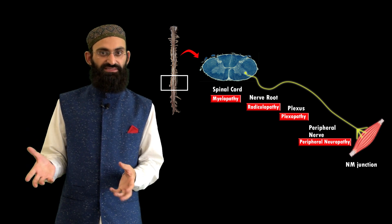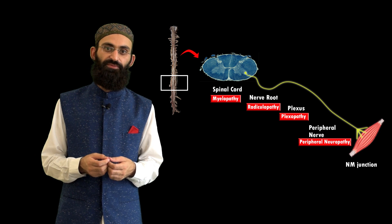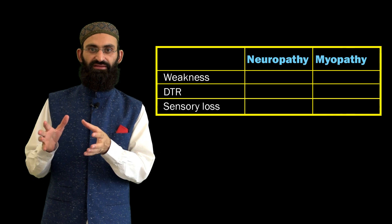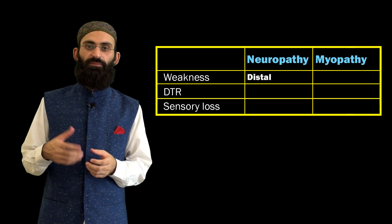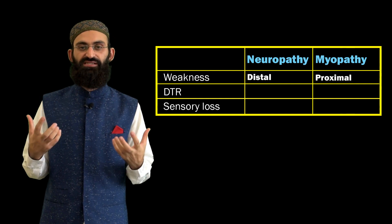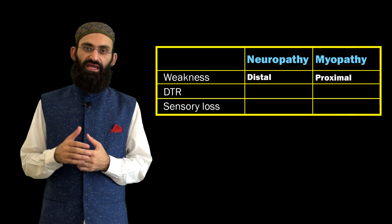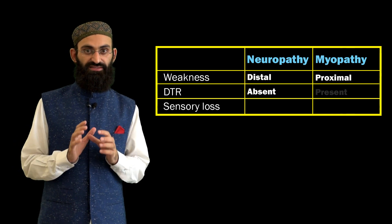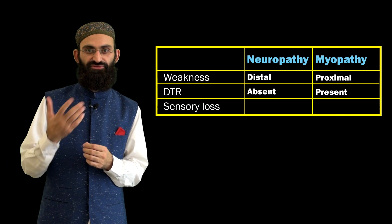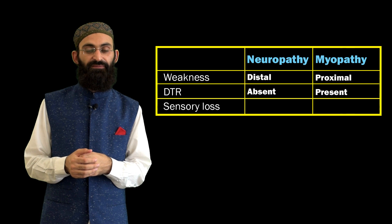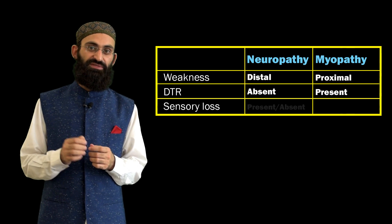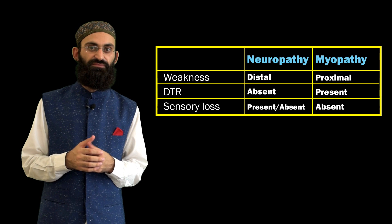Examples of peripheral neuropathy include Guillain-Barré syndrome or chronic inflammatory demyelinating polyneuropathy. To differentiate neuropathy from myopathy: neuropathy primarily involves distal muscles while myopathy involves proximal muscles of the pectoral and hip girdle. In neuropathy, deep tendon reflexes are absent, while in myopathy they are generally preserved except in very advanced cases. Additionally, in mixed polyneuropathy there is sensory deficit in addition to motor weakness, which is not seen in myopathy.